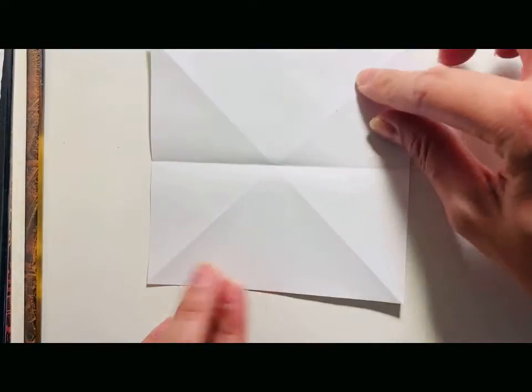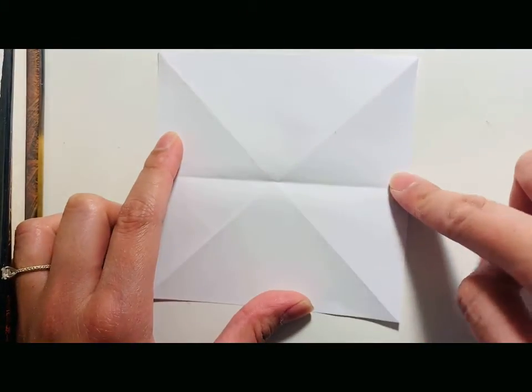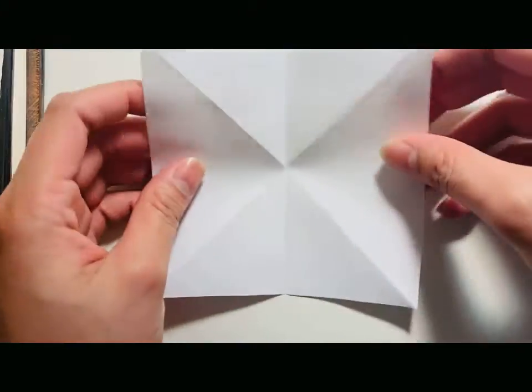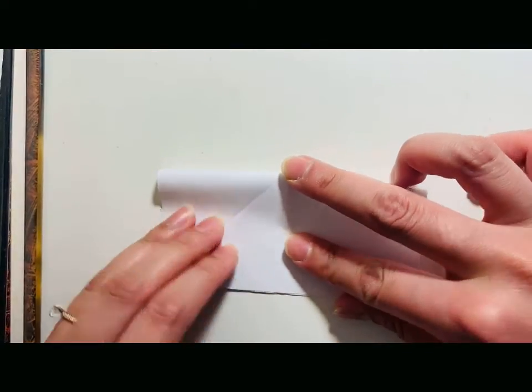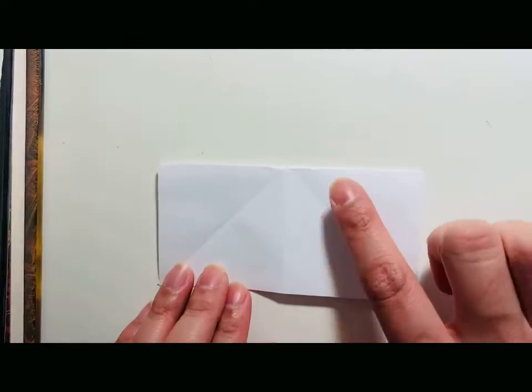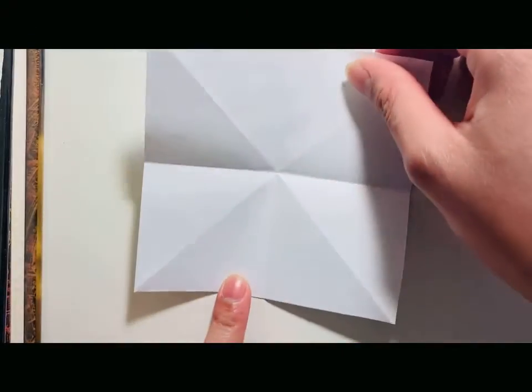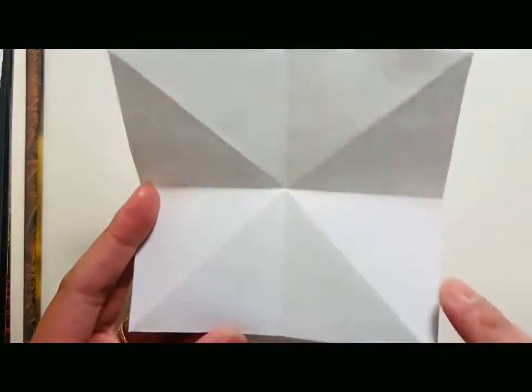Then we open up the square and you can see that joining the X-shaped folded lines is the one that goes across. And then rotate it, and then we're going to fold it the same way but this time the other side. And then we open it up again and you can see all the folded lines that we will need for the next steps.